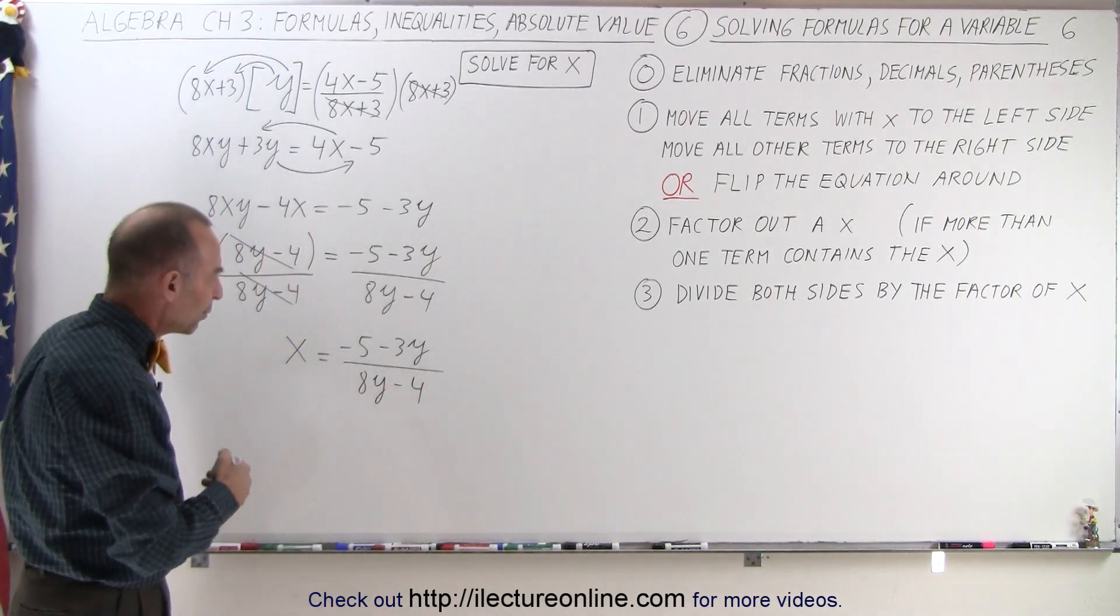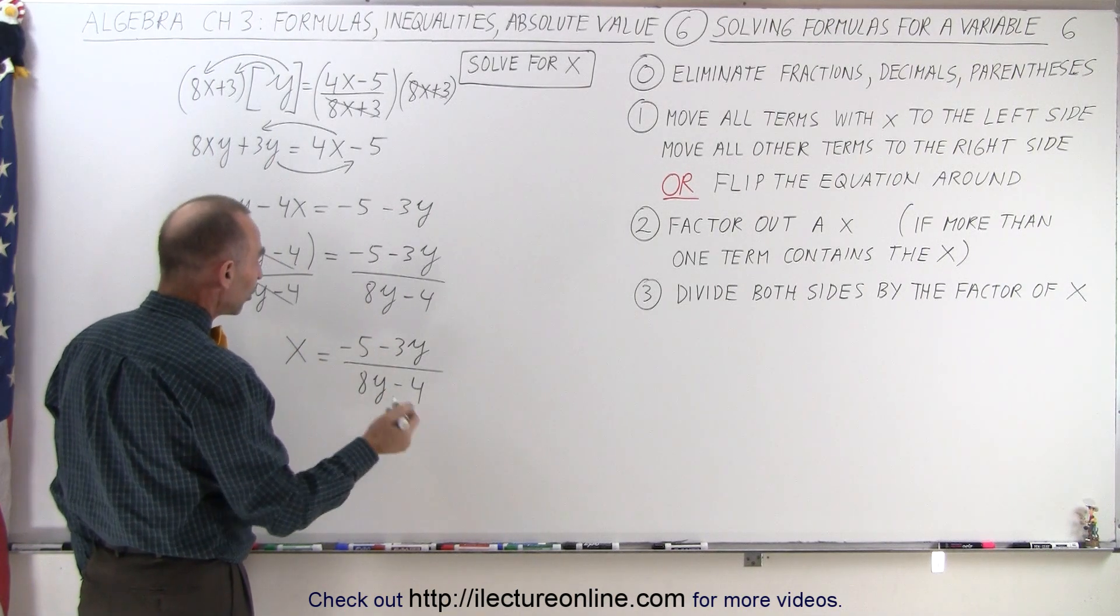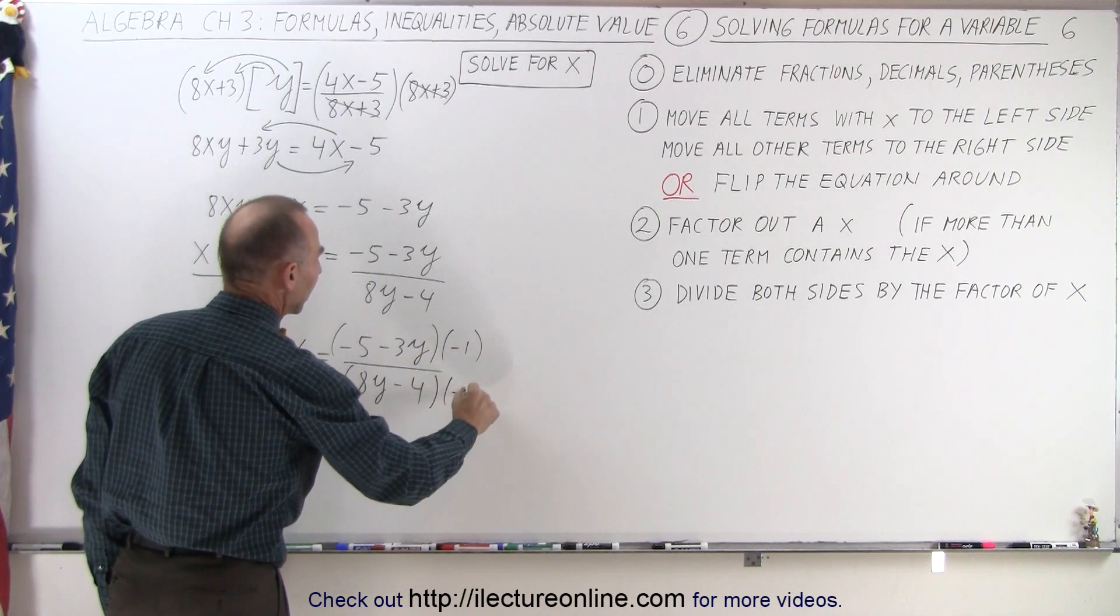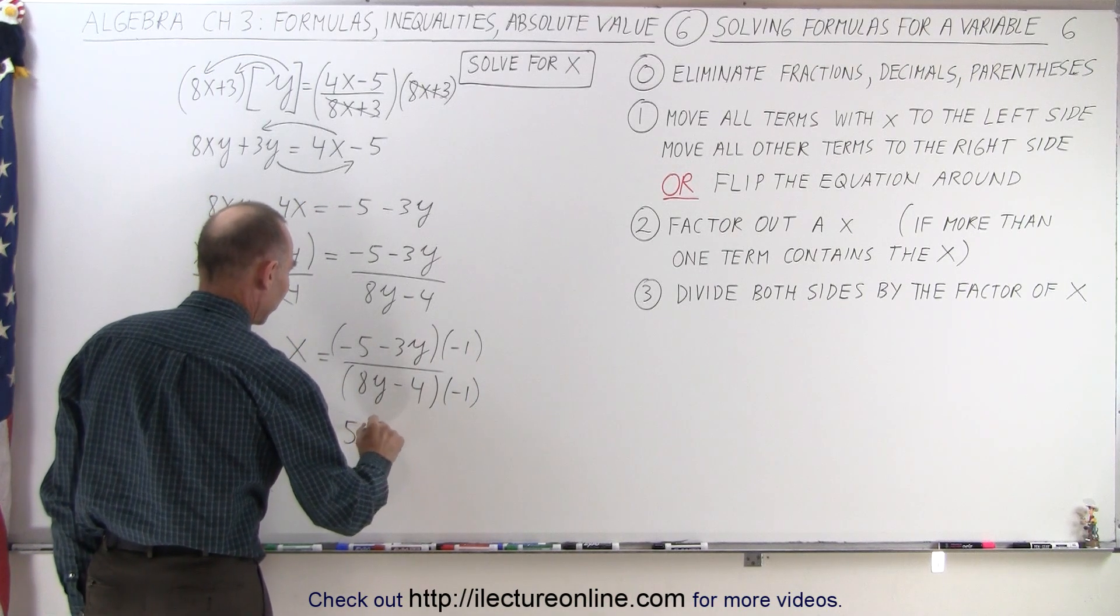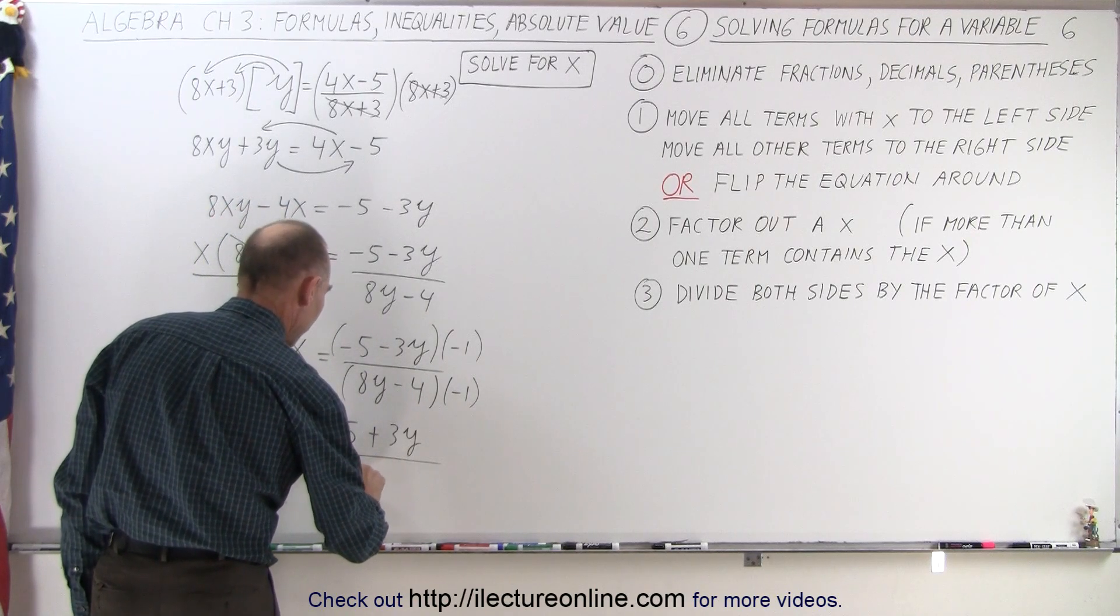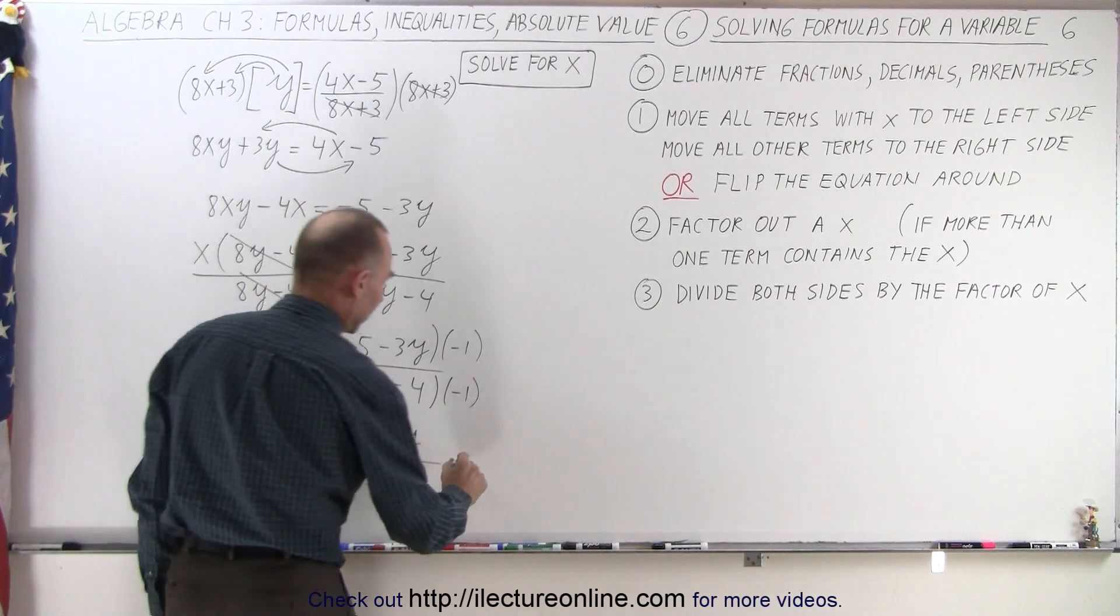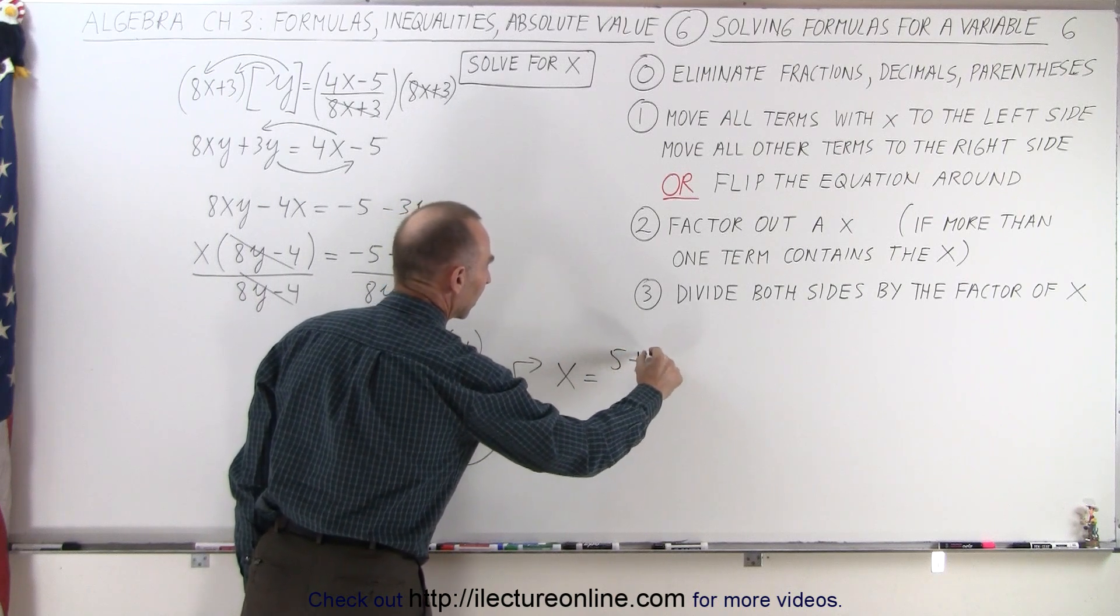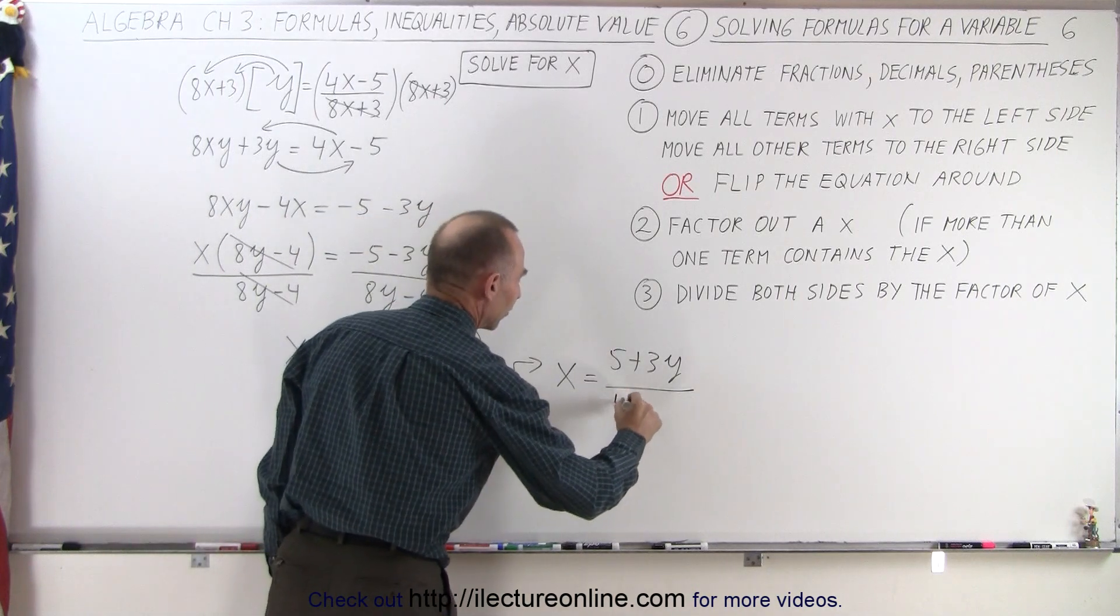Now, sometimes we may want to rewrite this a little bit because we may not like the fact we have two negatives in the numerator, so what we could do is we could multiply the numerator by a negative 1 and multiply the denominator by a negative 1. If I do that, I get x is equal to 5 plus 3y divided by the denominator. I end up with minus 8y plus 4, and then if I switch these around, I can then write it as x is equal to 5 plus 3y divided by 4 minus 8y.